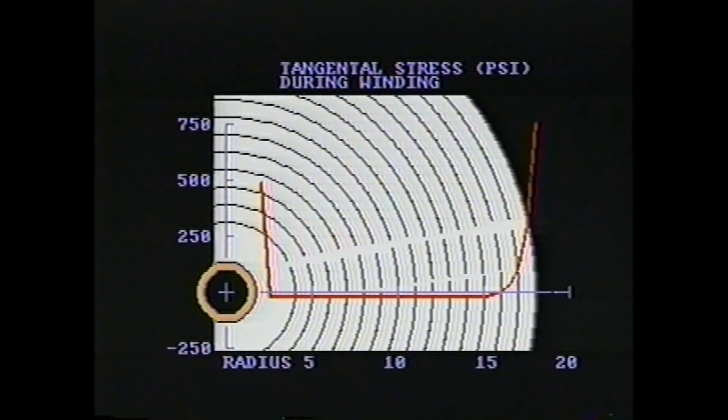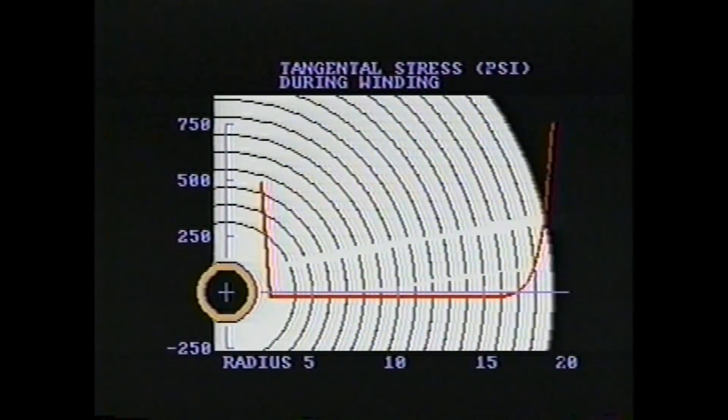Tangential stresses are important. The high tensile tangential stress at the outside of the roll is what determines the maximum paper roll size that can be wound without bursts.